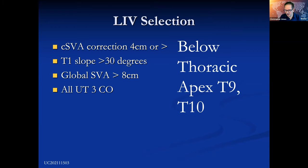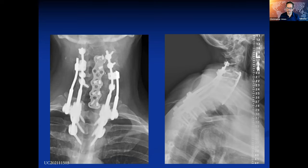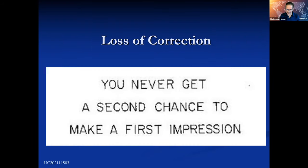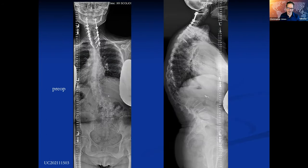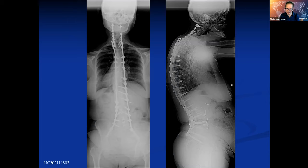You would never stop a thoracolumbar case at T8 or T7, but we used to do that too much in cervical thoracic deformity — so we go lower now. Finally, be careful with your connectors. They can rotate on the rods and you can lose correction. Put crosslinks on to avoid rod-to-rod migration of your connectors if you're using them for junctional correction. They'll actually migrate anteriorly — not loose, still connected — but you'll lose your sagittal correction.